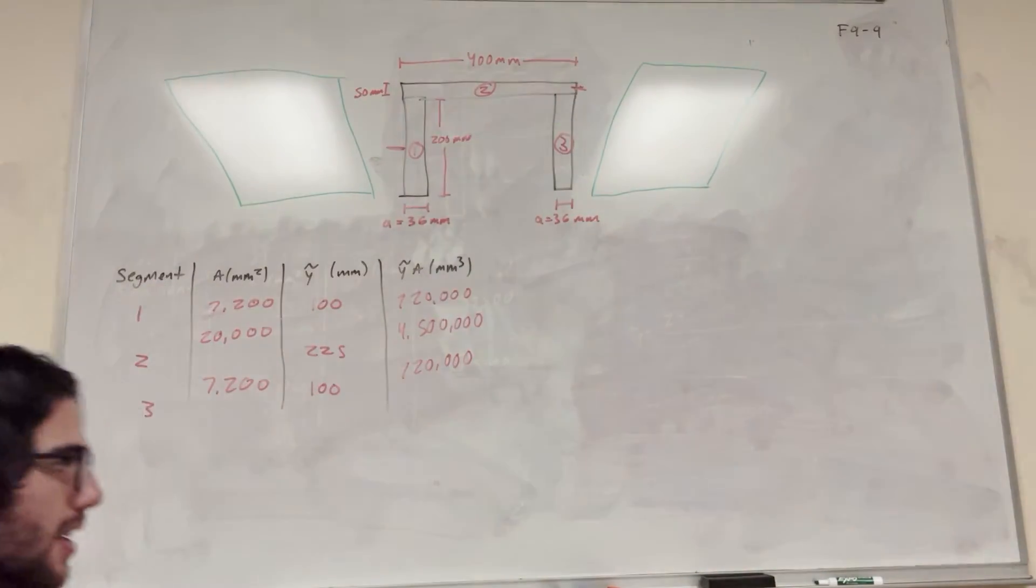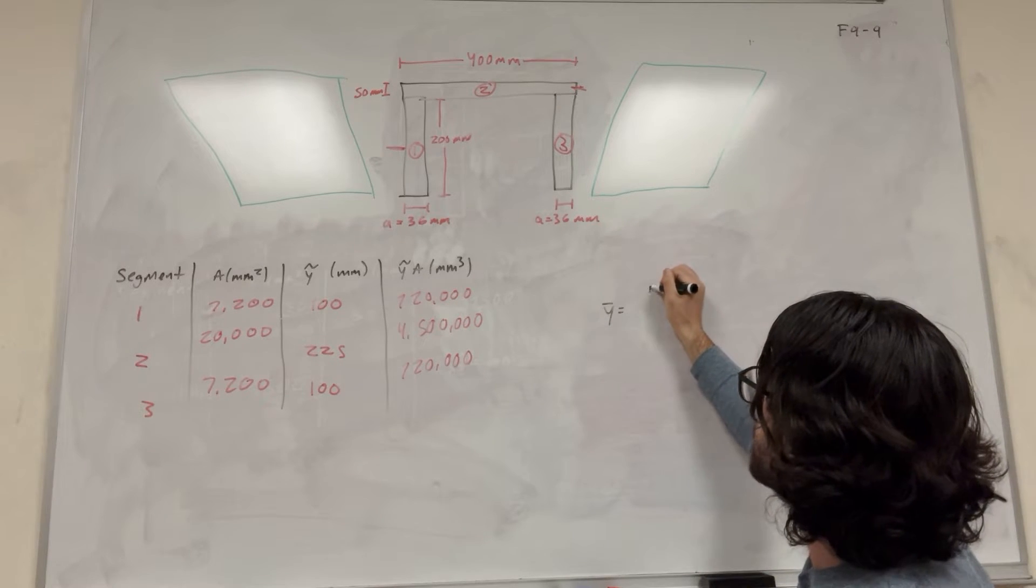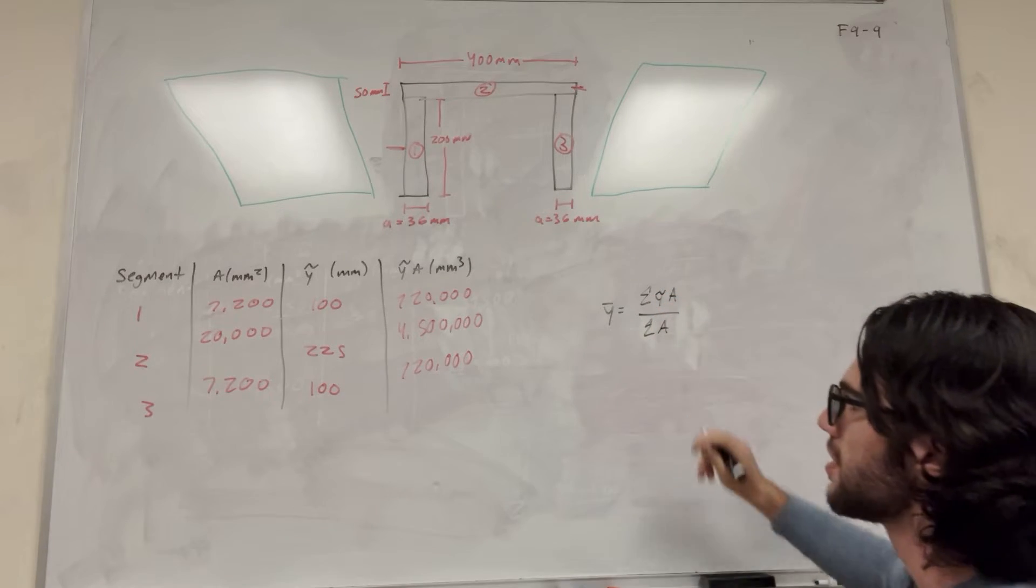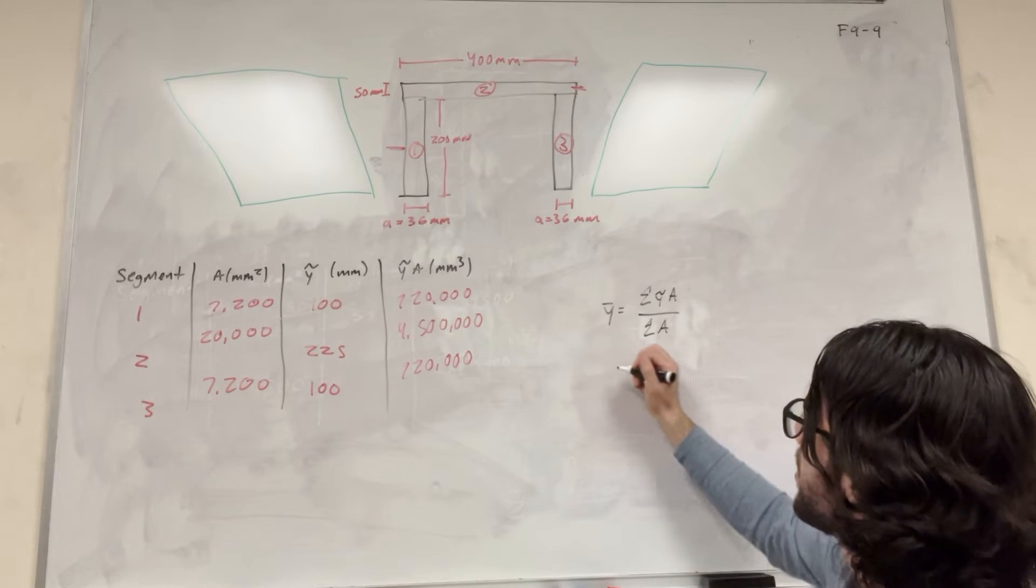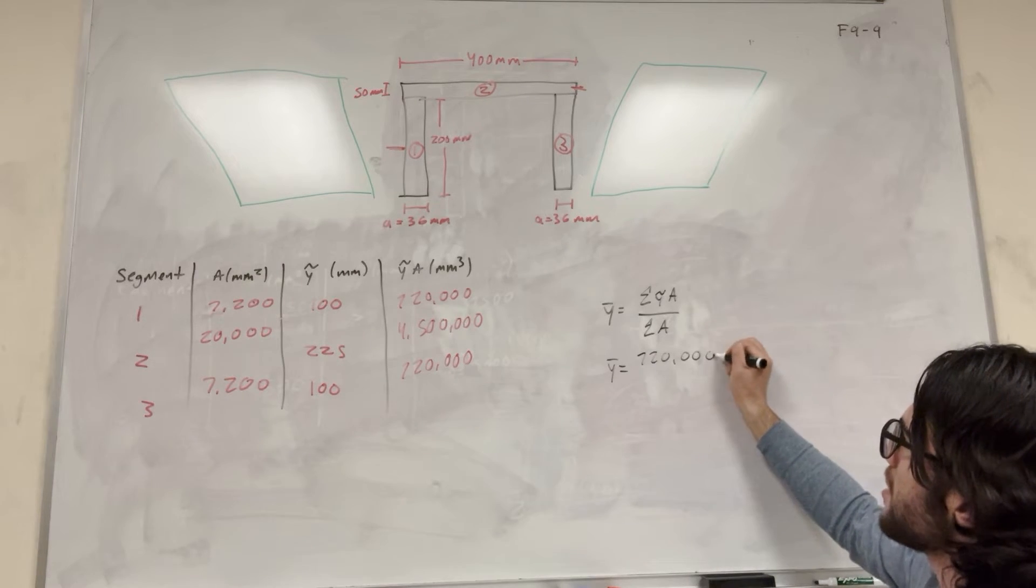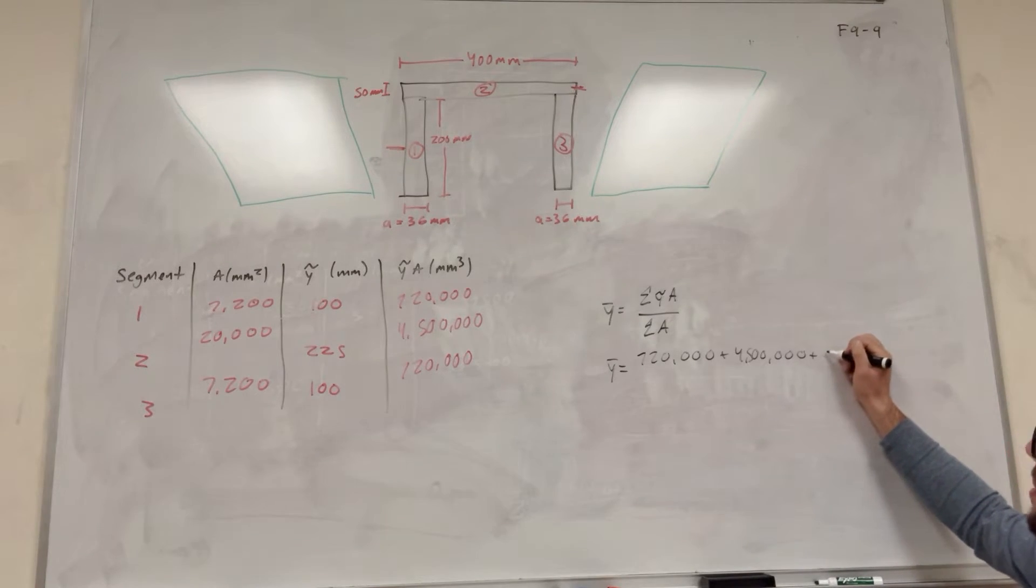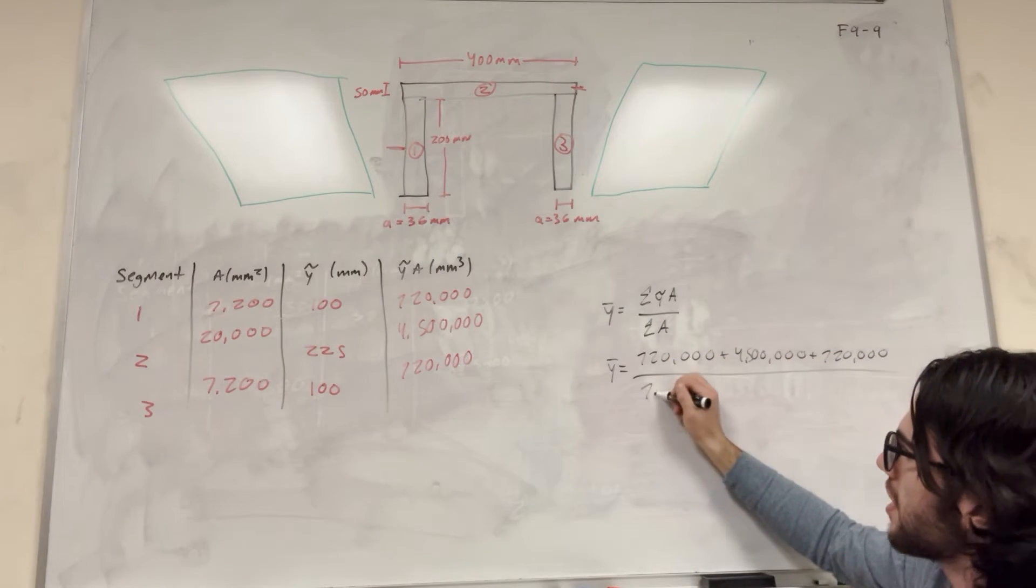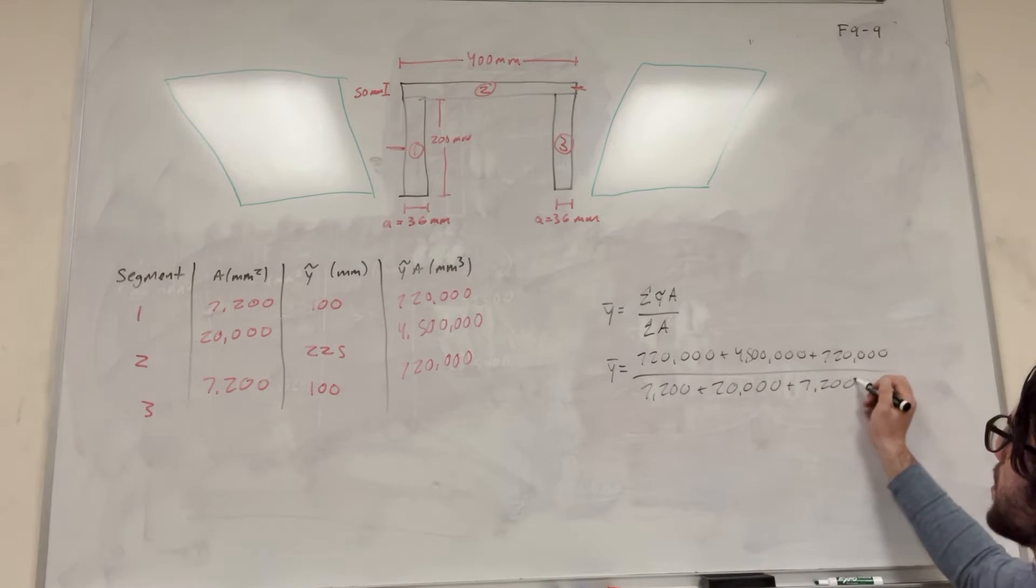So then our final step is using our formula. So the formula for this, y bar, is equal to the sum of y tilde area over all the areas. So we have y tilde area, we have these three, and we have all the areas, so now we just need to add them up. So it's simply going to be 720,000 plus 4,500,000 plus 720,000, divided by all of our areas. So 7,200 plus 20,000 plus 7,200.